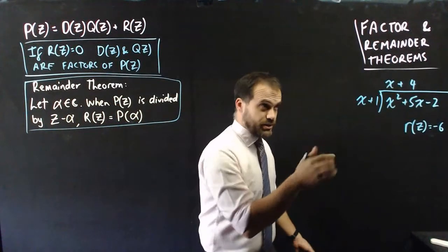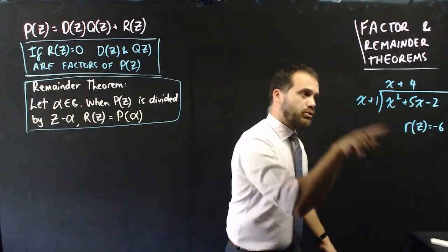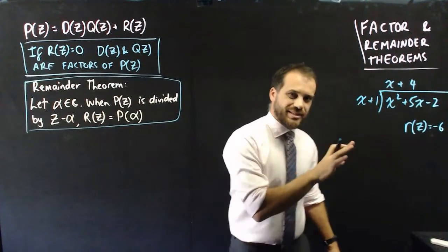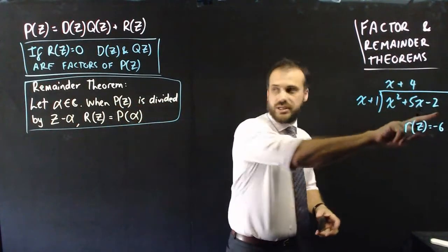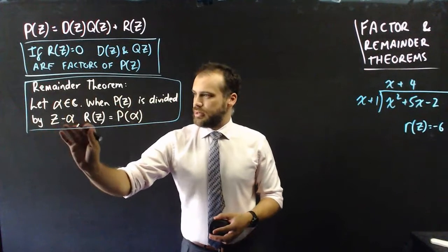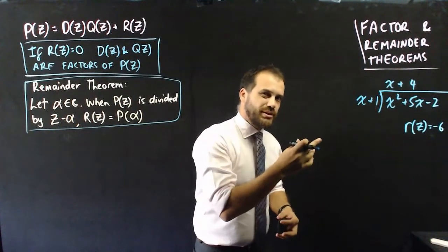So you should remember this from about two minutes ago. X squared plus 5x minus 2 divided by x plus 1 gives x plus 4 with a remainder of negative 6. And when we look at our remainder theorem here, it says when P of z, that's P of z, is divided by z minus alpha. This is z minus alpha here. I should really have z's everywhere.